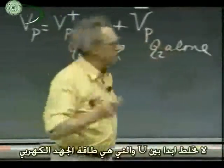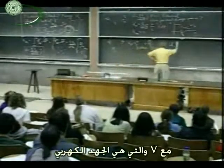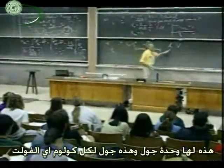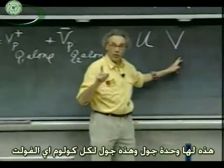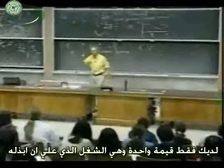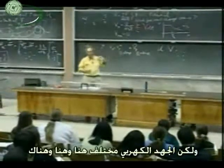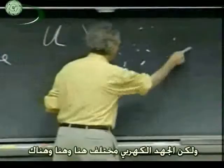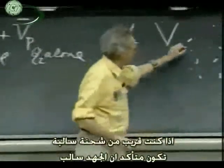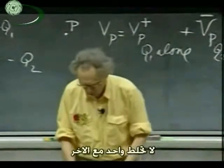Never confuse U, which is electrostatic potential energy, with V, which is electric potential. U has units of joules and V has units of joules per coulomb, which we call volts. If I have a collection of charges — pluses and minuses — U has only one value: it is the work that I have to do to put all these charges exactly where they are. But the electric potential is different here, from there, from there — it varies in space. If you're very close to a plus charge, you can be sure that the potential is positive. If you're very close to a negative charge, you can be sure that the potential is negative. But U has only one number, only one value. They're both scalars. Don't confuse one with the other.